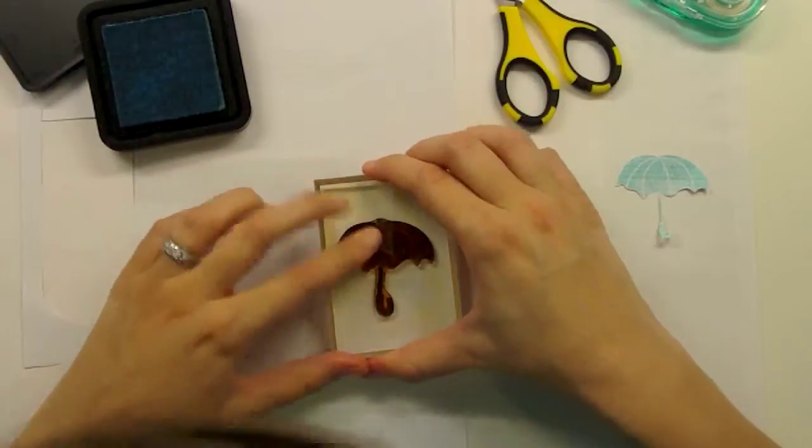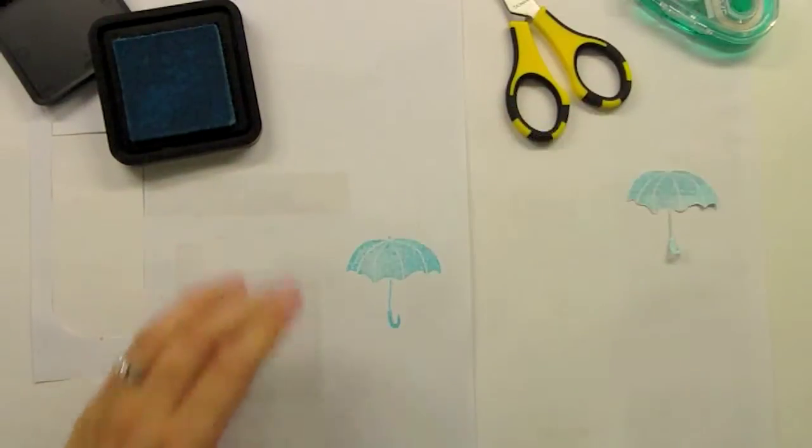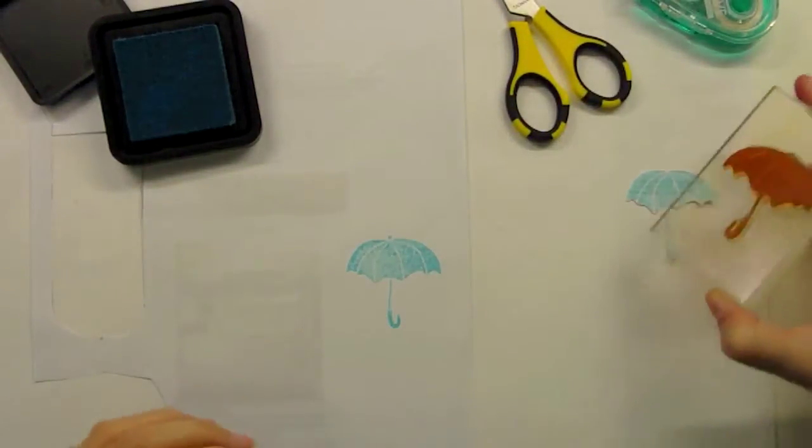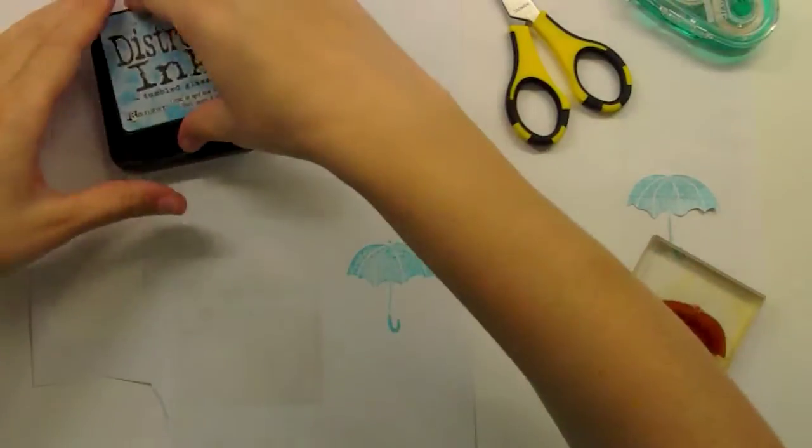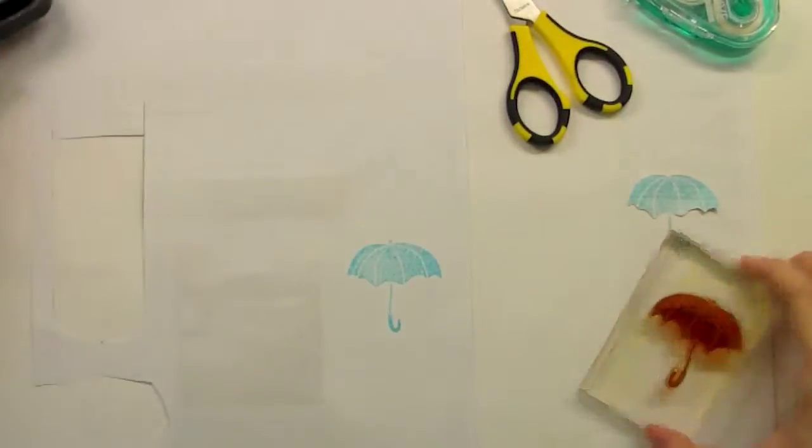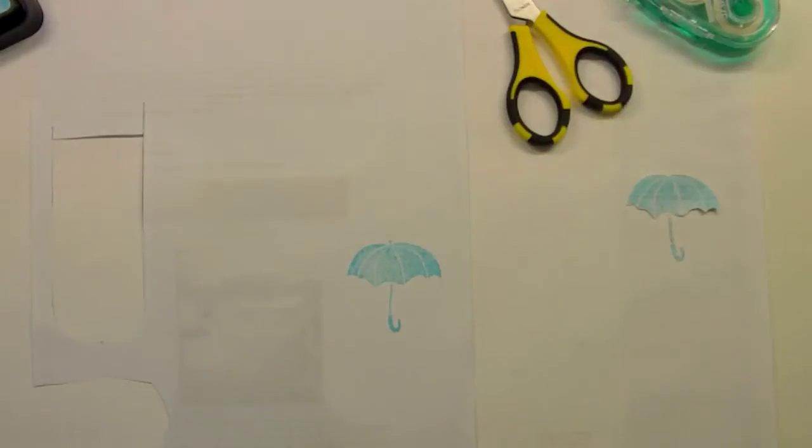But we're going to go on and do some more masking. Right now I'm stamping the umbrella poorly again. This time I'm going to stamp it so that we're going to do raindrops and I don't want the raindrops to be underneath the umbrella.